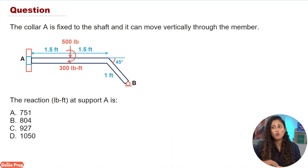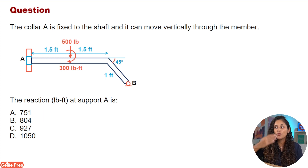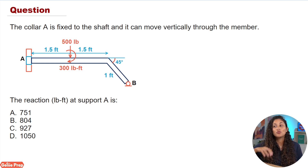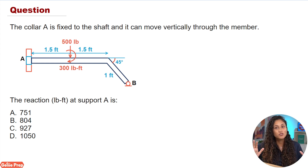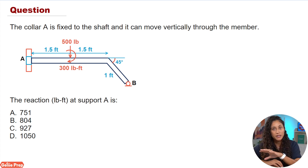Let's go over the question together. The collar at A is fixed to the shaft and it can move vertically through the member. We want to find the reaction at support A. To solve this problem, the first thing you need to do is draw the reaction forces at A and also at B.